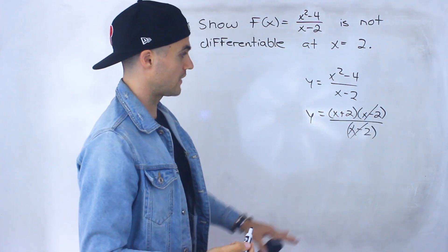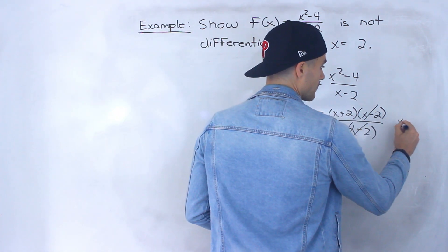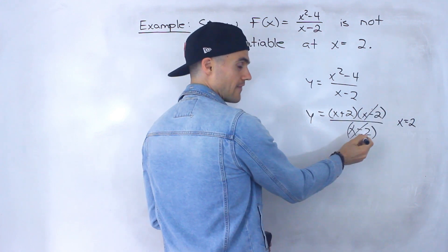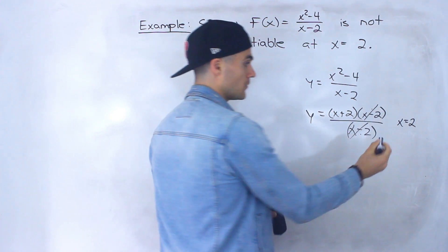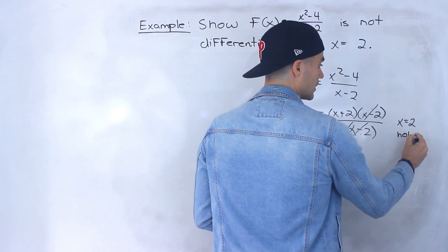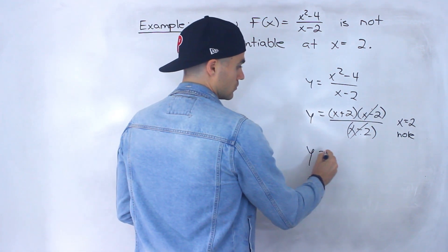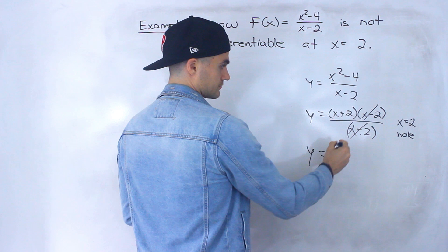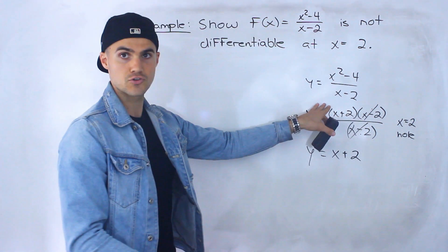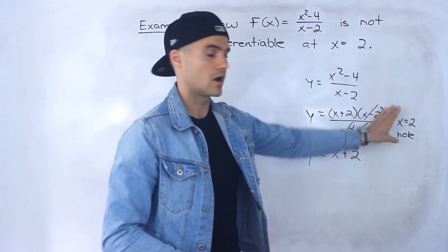And if you remember from advanced functions, if this happens here what does that mean? That means at an x value of 2 which makes both the numerator and the denominator equal to 0, at an x value of 2 there's going to be a hole. And so basically this function here is the line x plus 2 which is the factor that's remaining, that has a hole at an x value of 2.